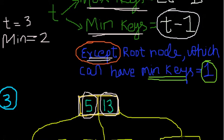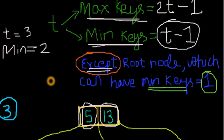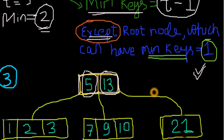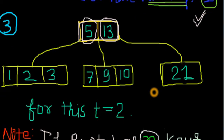In this case, the minimum keys are 2. But if you have a root node, it can have minimum key equal to 1 also. This is the exception. The minimum key that a tree can hold is 2, but root is an exception - it can hold minimum key equal to 1.